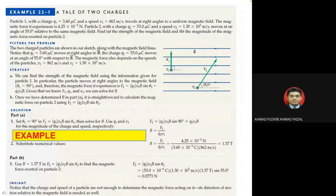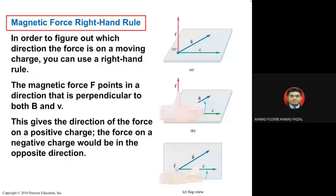The direction of the magnetic force is determined using the right-hand rule. The thumb points in the direction of force, and the rest of your fingers point in the direction of velocity — v cross B gives F. Remember, magnetic force is a vector quantity and has both magnitude and direction.